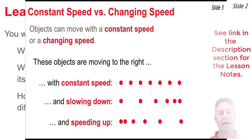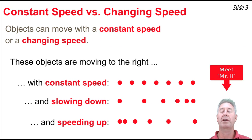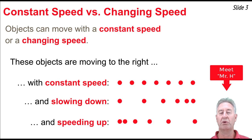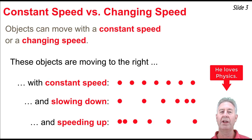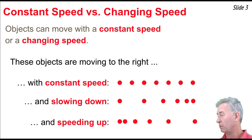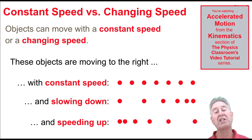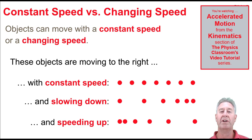Objects that are moving are either moving with a constant speed or a changing speed. If they're changing speed, they're either speeding up or slowing down. So of the three ways that objects could move, we could observe them covering the same distance every second, covering a decreasing distance every second — as in slowing down — or covering an increasing distance each consecutive second.